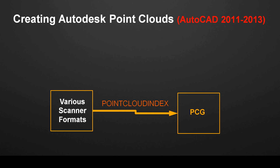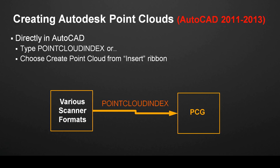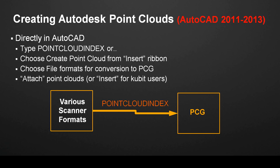Creating Autodesk point clouds — a review for AutoCAD 2011 to 2013. For those of you that are already familiar, you'll know that you have to go directly into AutoCAD first. Then you're going to either type point cloud index into the command prompt, or choose the Create Point Cloud button from the Insert ribbon. You simply choose the file format from your scanner manufacturer, the raw data, the registered data, and from there it converts that data into the PCG format. The PCG is what you attach when you're ready to bring the point clouds into a drawing.